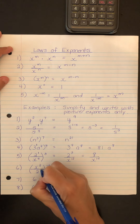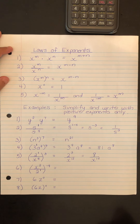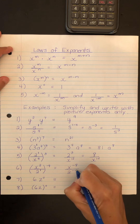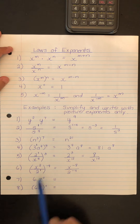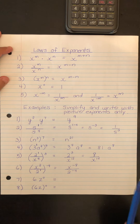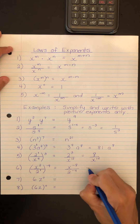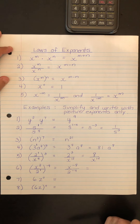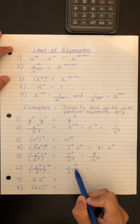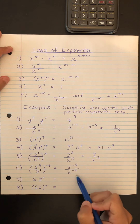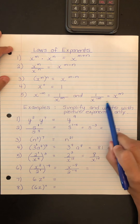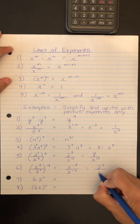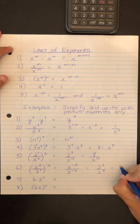Number 6: again, there is an implied exponent of 1 here. Multiplying each exponent by negative 4, we get x to the negative 8 over 2 to the negative 4. Now we apply rule 5 twice: x to the negative 8 becomes 1 over x to the 8, and 2 to the negative 4 in the denominator becomes 2 to the positive 4 in the numerator. So the result is 2 to the 4 over x to the 8, and 2 to the 4 is 16.